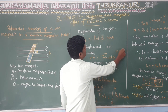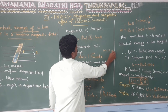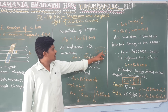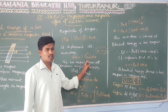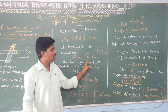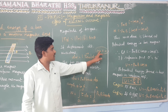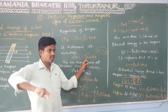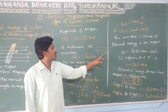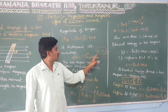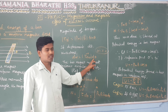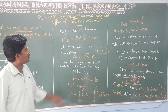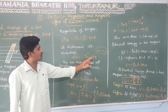Work is equal to force times displacement. In the same way, we can apply this to rotational motion. We can use torque to describe rotational work. Linear displacement is D; angular displacement is D theta. So for circular motion, W is equal to external torque times D theta.